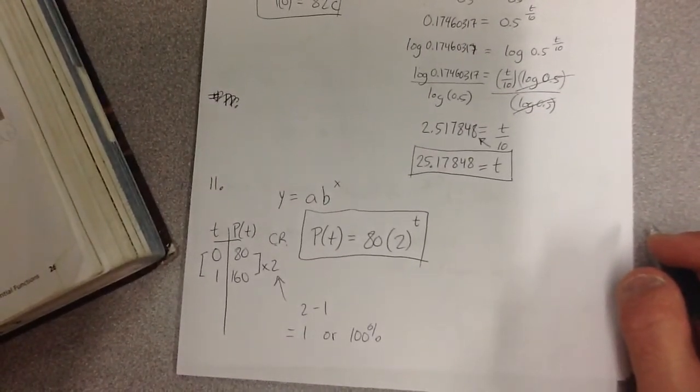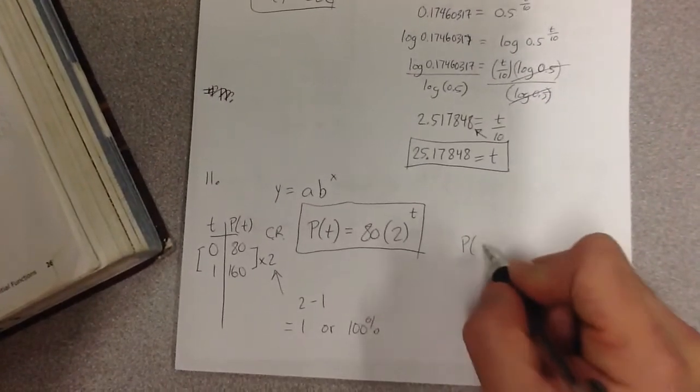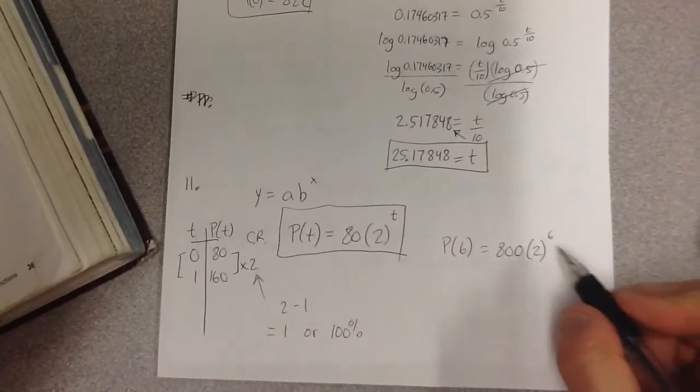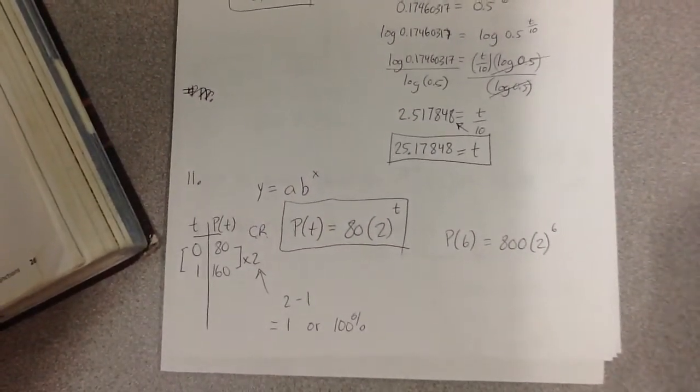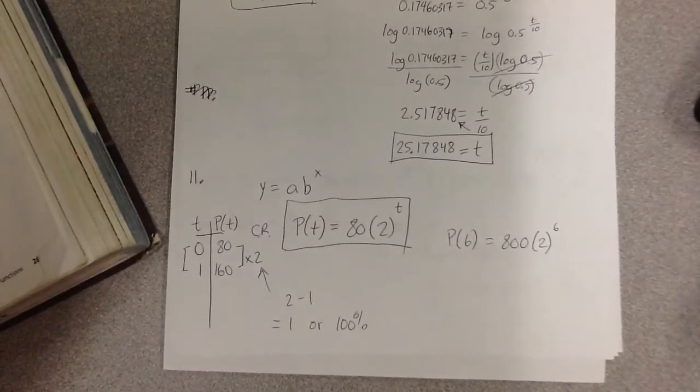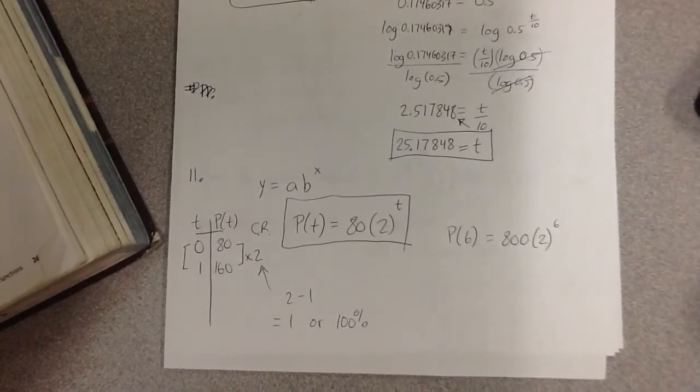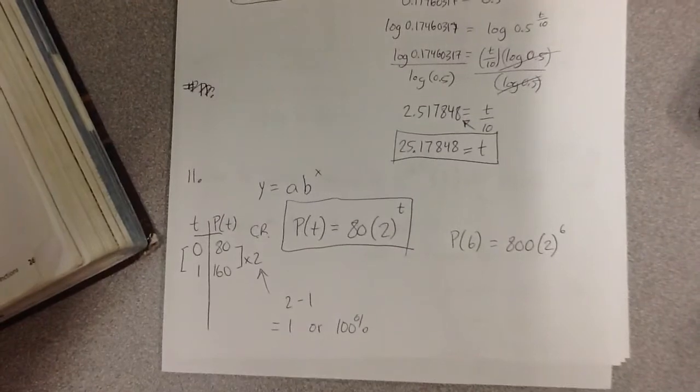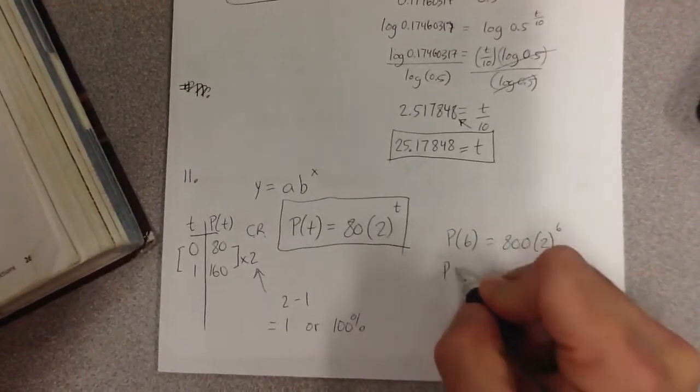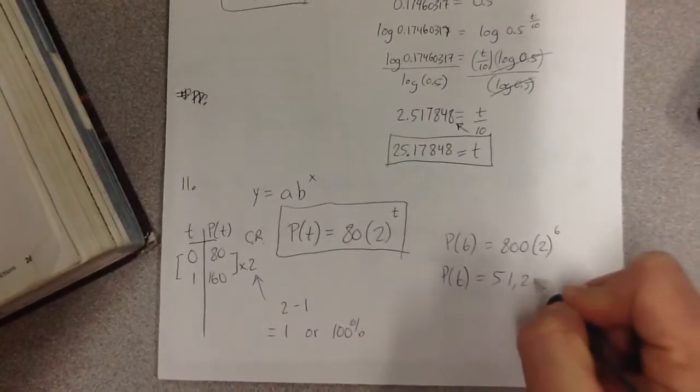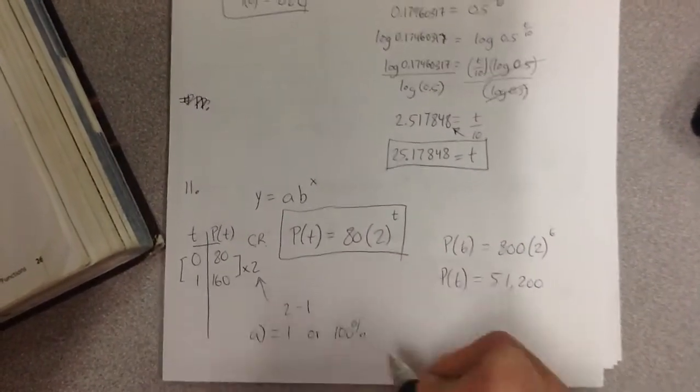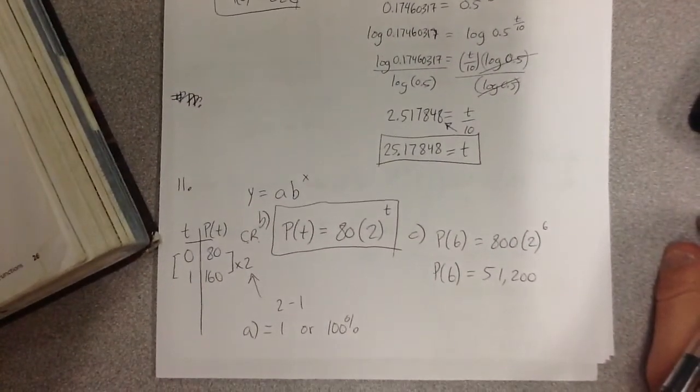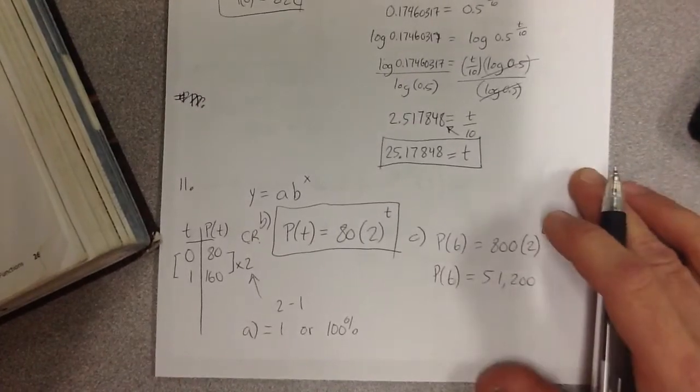Use the equation to determine the population after six hours. Well, that's pretty simple. All I'm doing is plugging in a six here. Just remember when you're doing the plugging in of the six, do two to the power of six first. Please don't go 80 times two first, and then put that to the power of six. So it's always two to the power of six first. And then you're going to multiply that by 80. And you should end up with 51,200. So the growth rate is 100%. There's your equation. And there's question C right there. And you can answer any questions after that there.